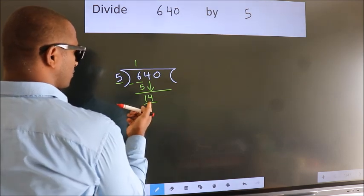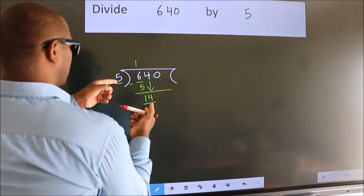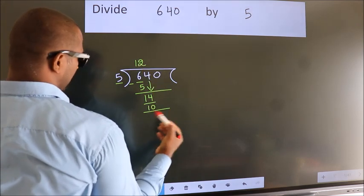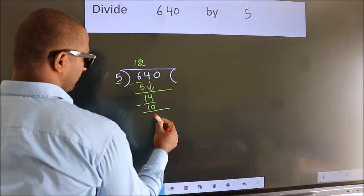A number close to 14 in 5 table is 5, 2s, 10. Now, we subtract. We get 4.